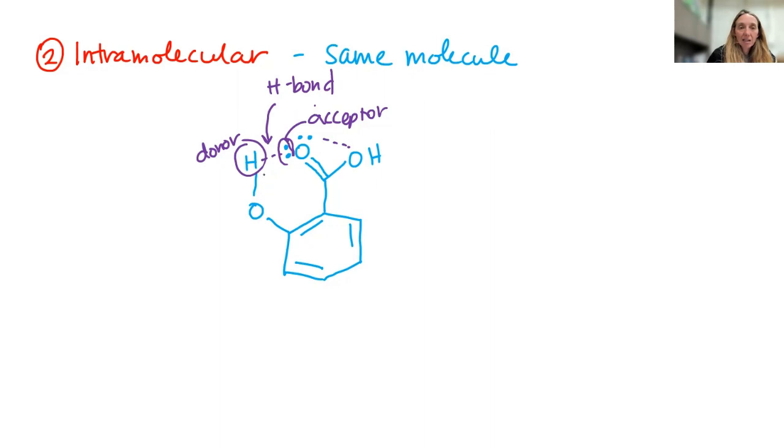So it only works in this case because when that hydrogen bond happens, there's one, two, three, four, five, six atoms that create a circle.